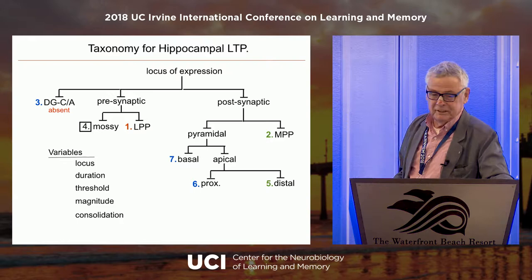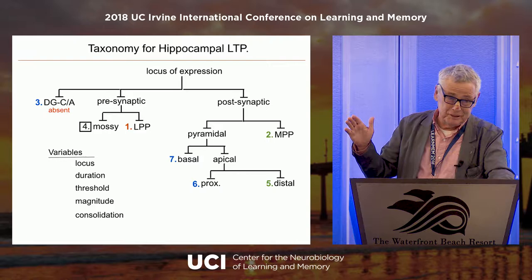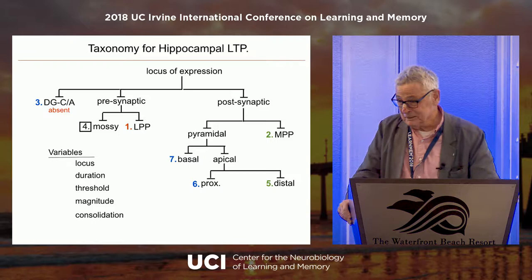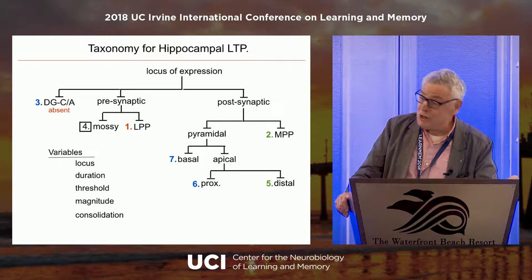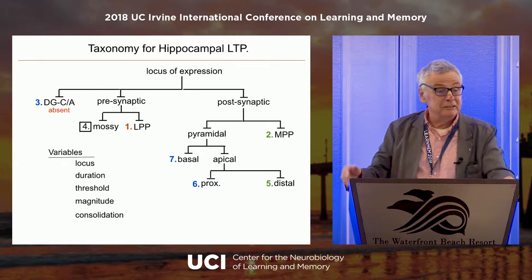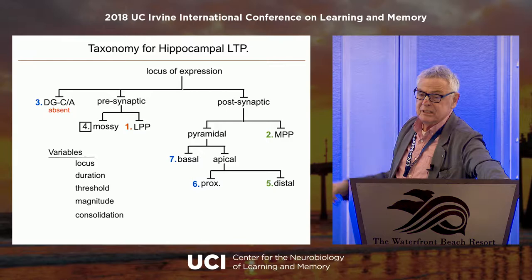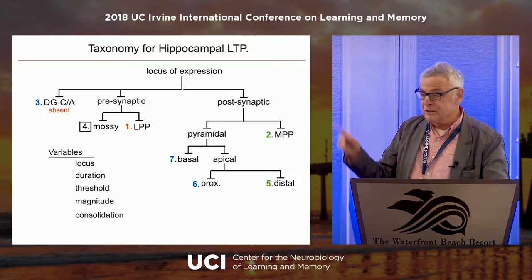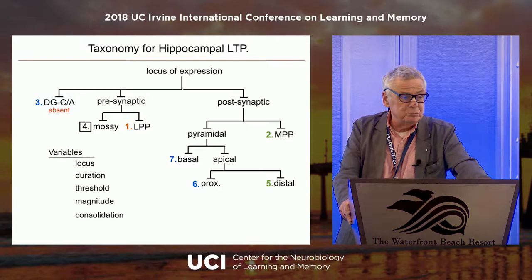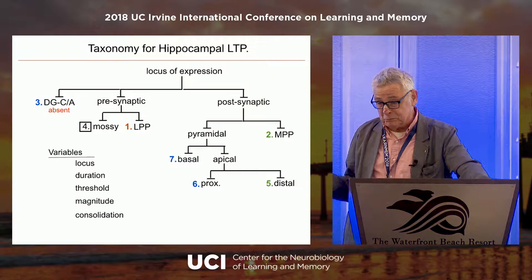I'll tell you that the lateral perforant path — where we wandered into Bliss's territory, the father of LTP — it is indeed presynaptic. All the way over on the left, we have the dentate gyrus commissural associational system, and it doesn't have LTP, which helps the categorization a lot. Over on the right, we have postsynaptic LTP. Separated to itself in the dendrogram is MPP — the medial perforant path — this is the arrival of spatial information. This is a postsynaptic form of LTP, but from the Irish group in Dublin we know it's a very strange kind of postsynaptic LTP.